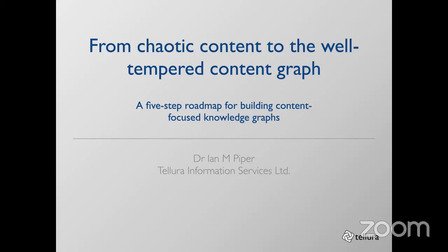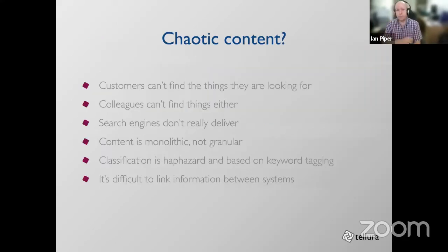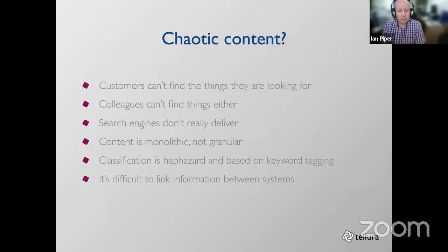Good afternoon everyone. Over the next half hour or so I'm going to be talking about how to apply graph technologies to content management and how we can use these to overcome the most common problems of information management. I said 'chaotic content' which is provocative, I know, but that's the situation most of us face daily. Nobody can find anything, our search engines don't really work the way we expect them to, content is arranged at the wrong level of granularity for reuse and repurposing, and where we're classifying content it tends to be haphazard and based on keyword tagging.